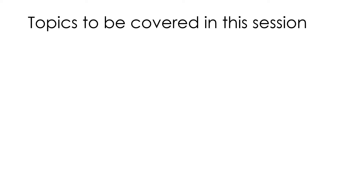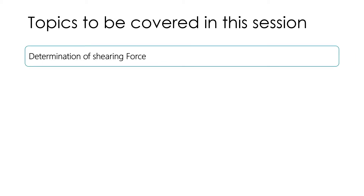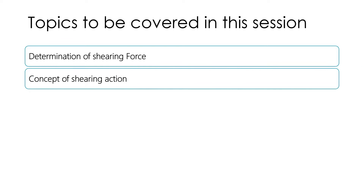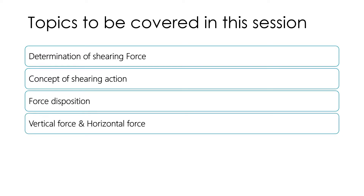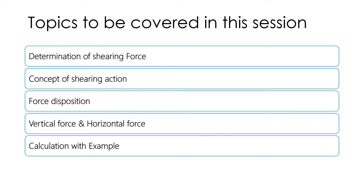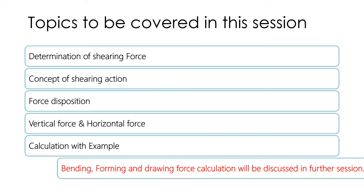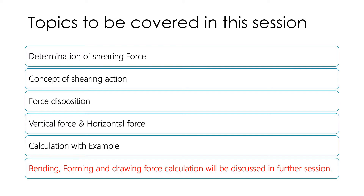We are going to see the determination of shearing force, and after that we will see the concept of shearing action, because until we know how shearing occurs we will not be able to clearly understand force disposition. Force disposition is divided into two types: horizontal force and vertical force. Further, we are going to see calculations with examples. In coming sessions we will see bending, forming, and drawing force calculations.